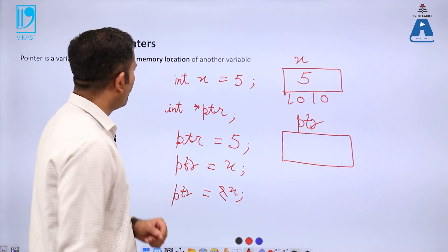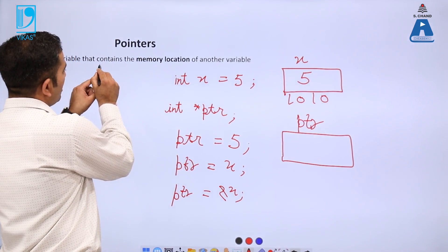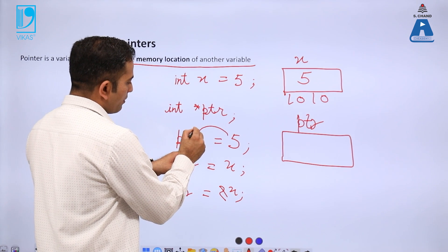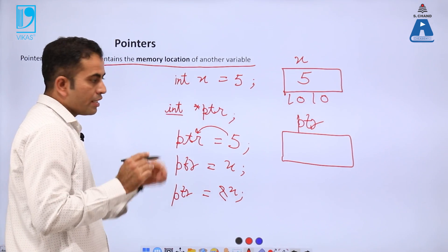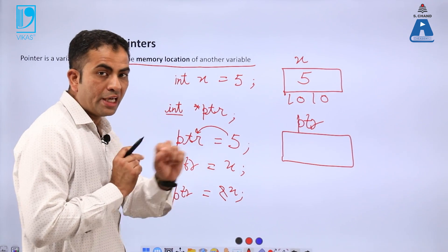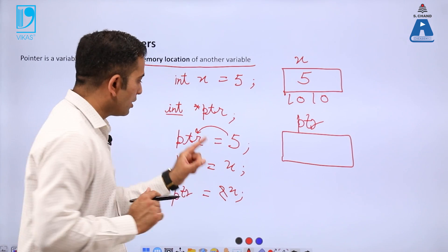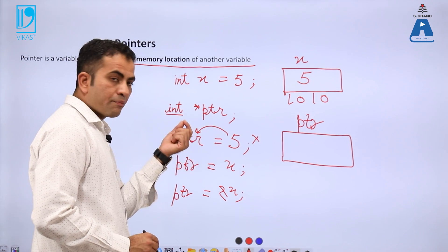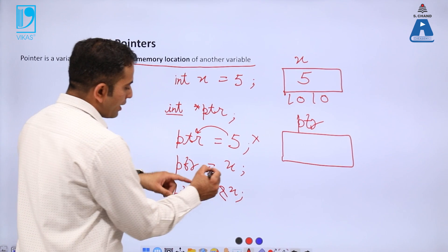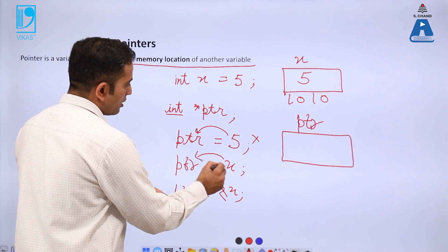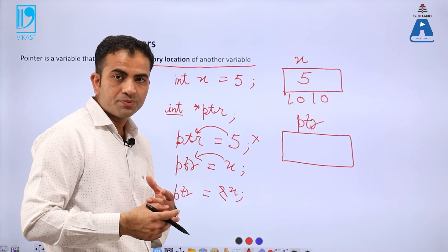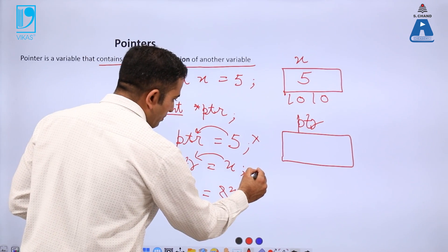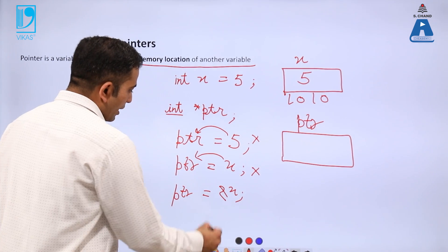As per the definition, a pointer is a variable that contains the memory location of another variable. If I assign 5 to ptr, 5 is a value, not a location — so this is a wrong statement. Similarly, if I assign x to ptr, x equals 5, which is again a value. We cannot save a value into a pointer type variable, so that statement is also wrong.